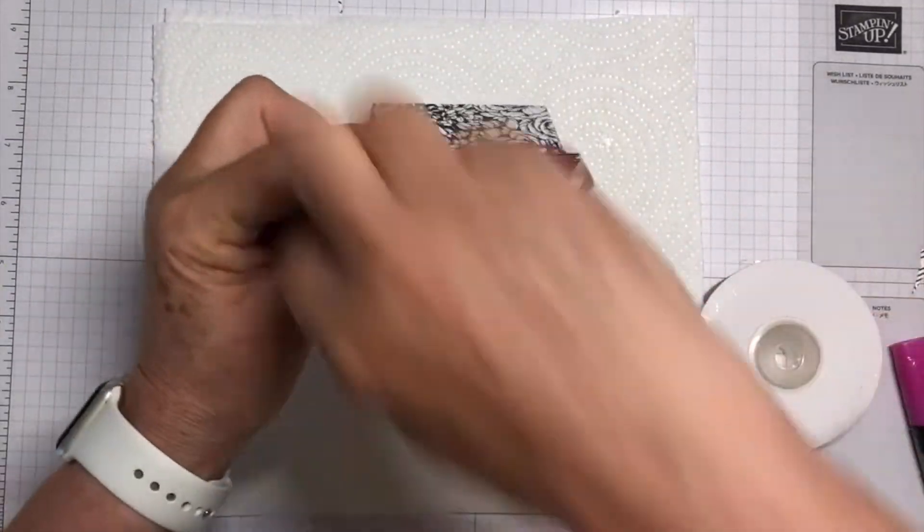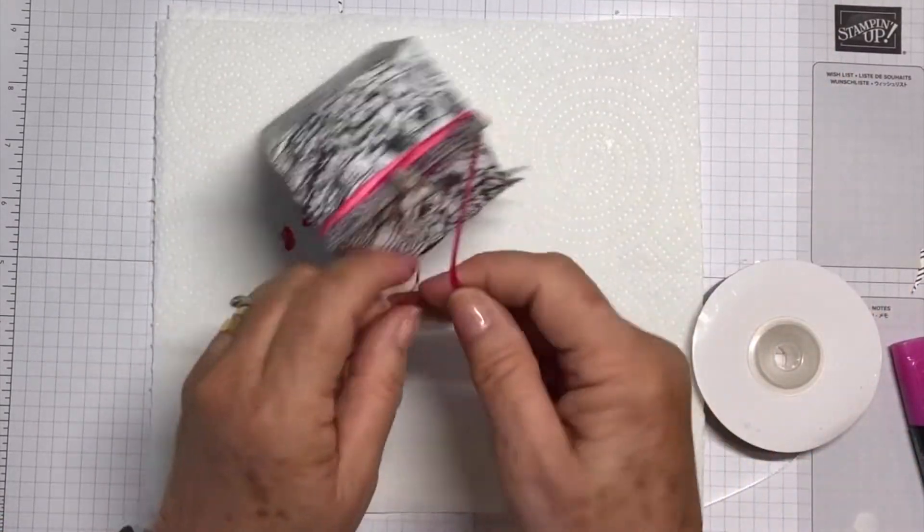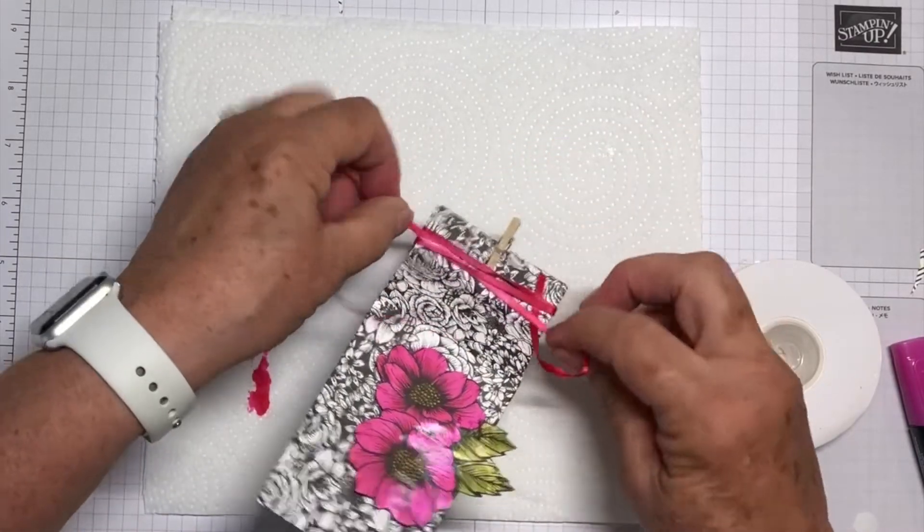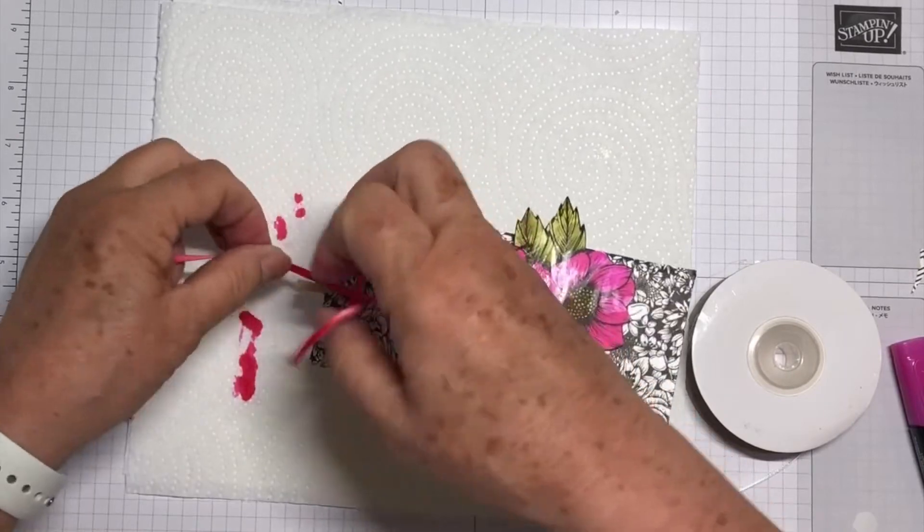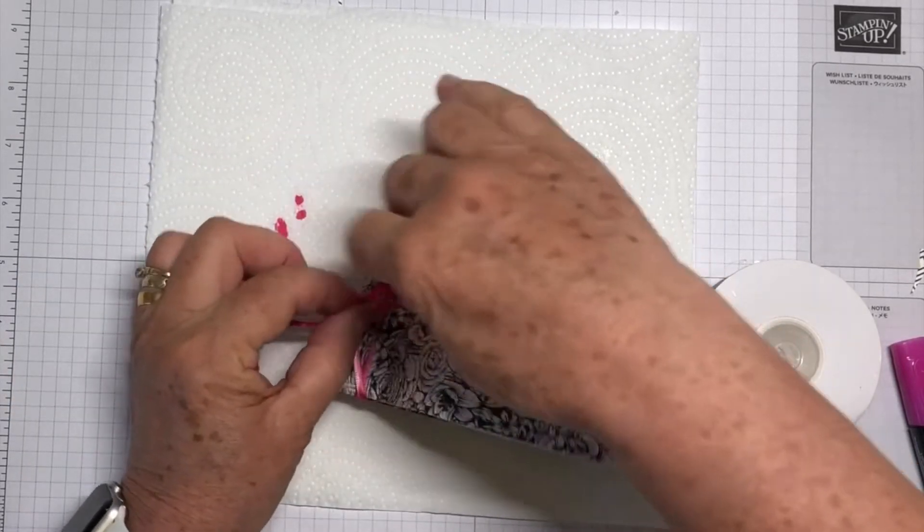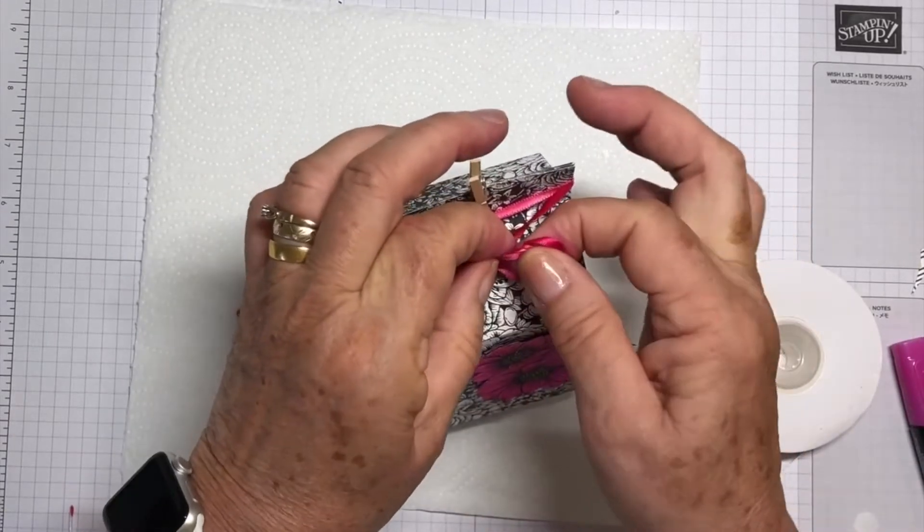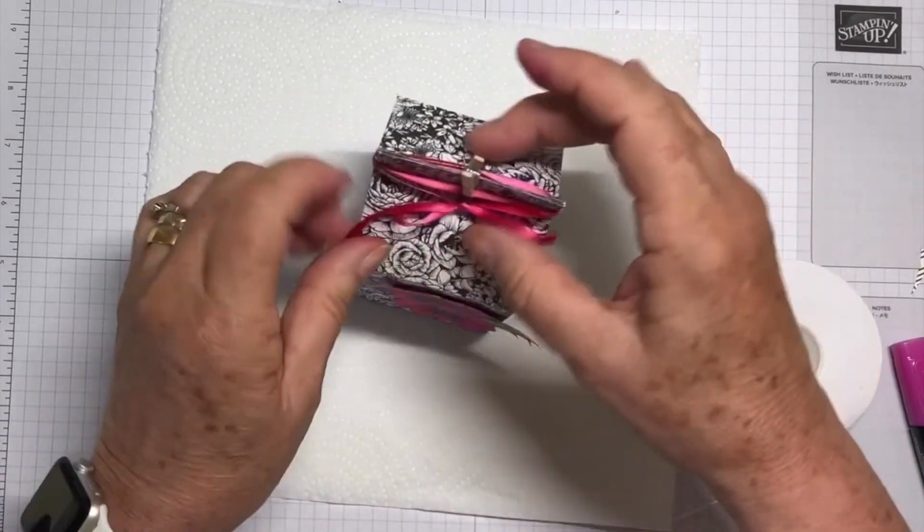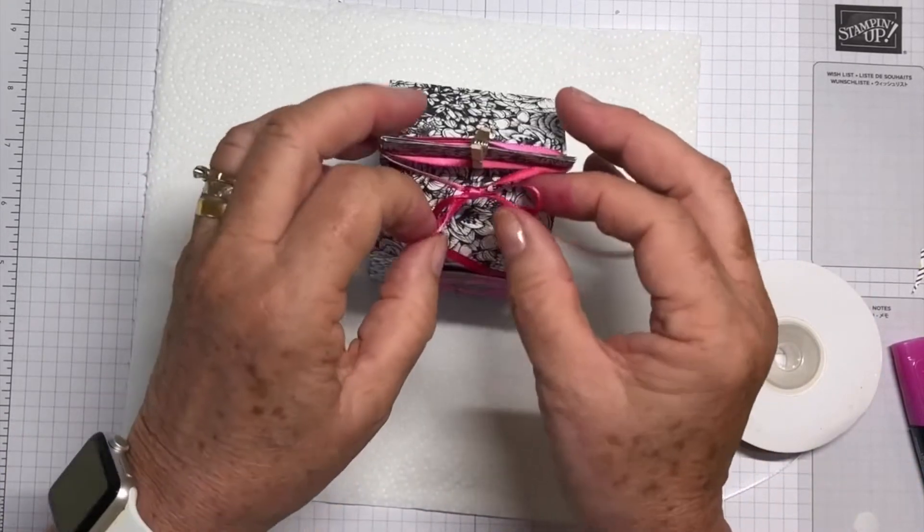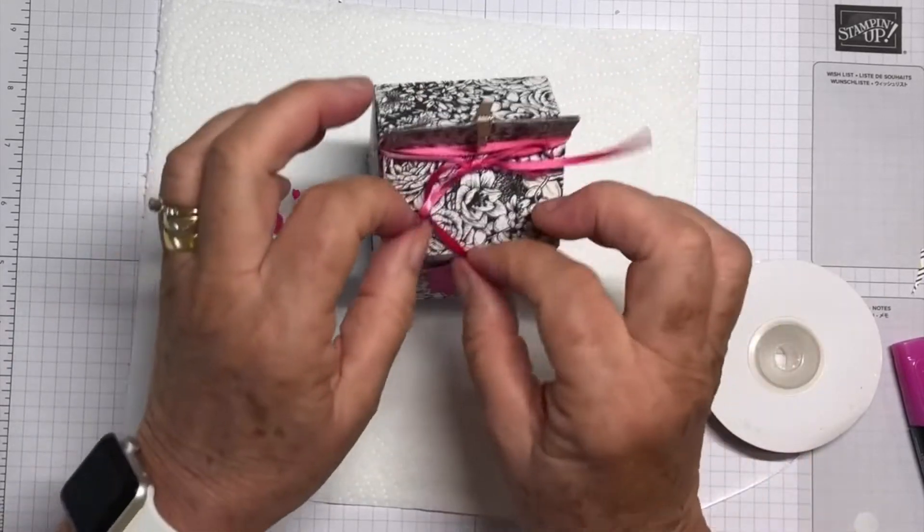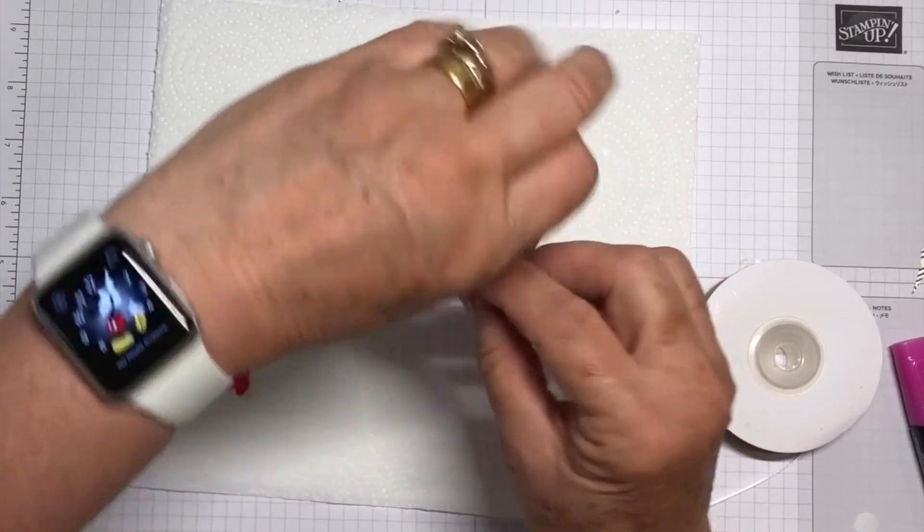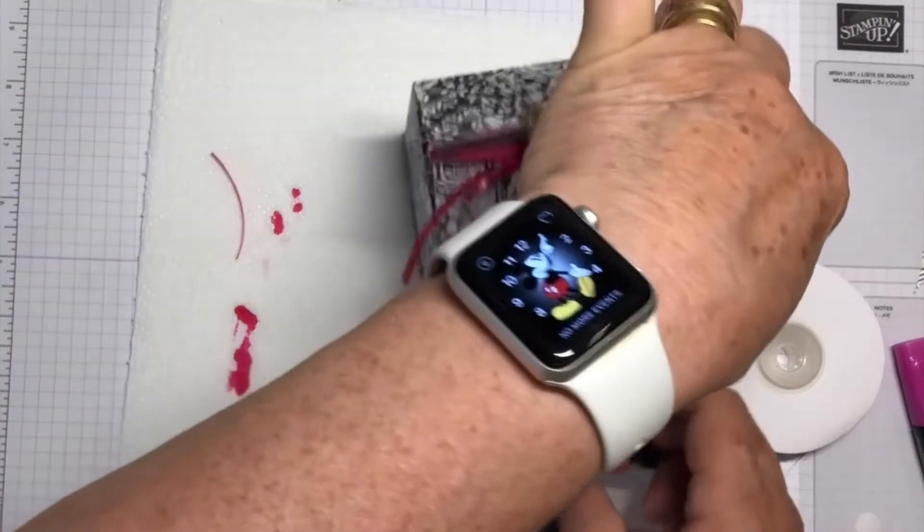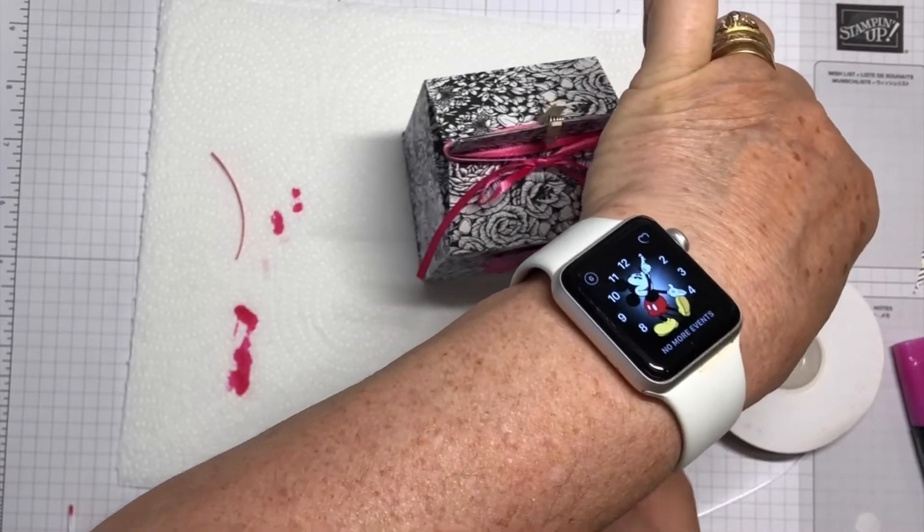So I'm going to just wind it round and then tie a bow. Just cut the ends.